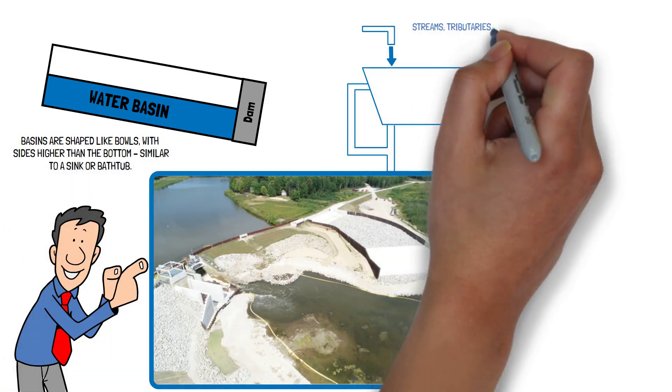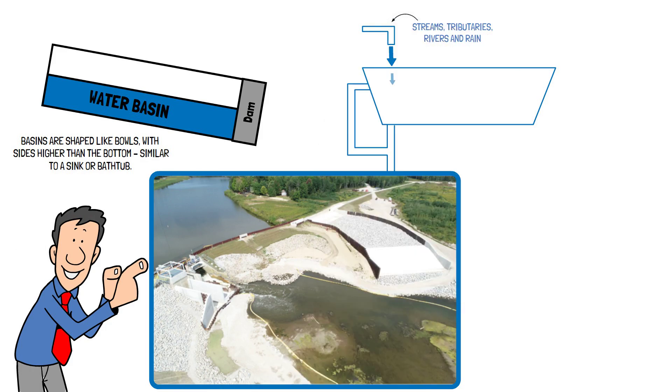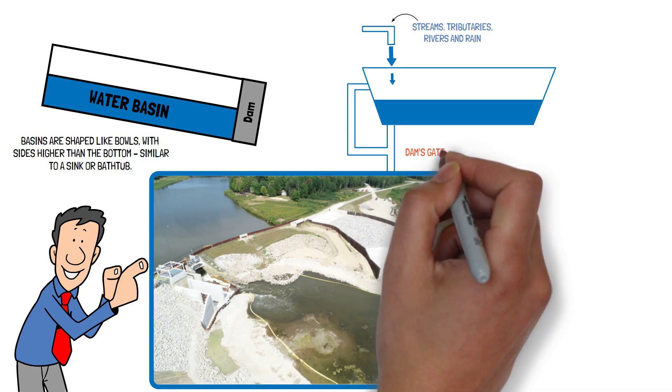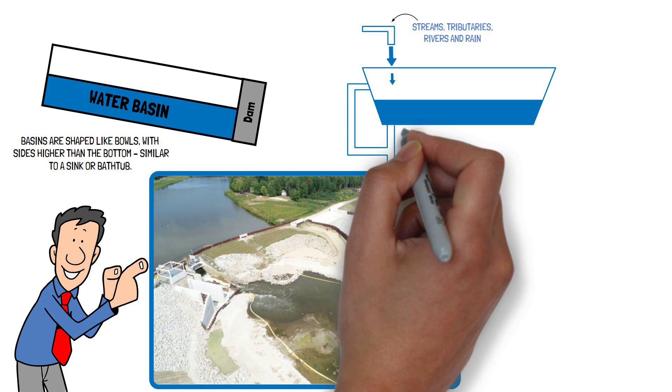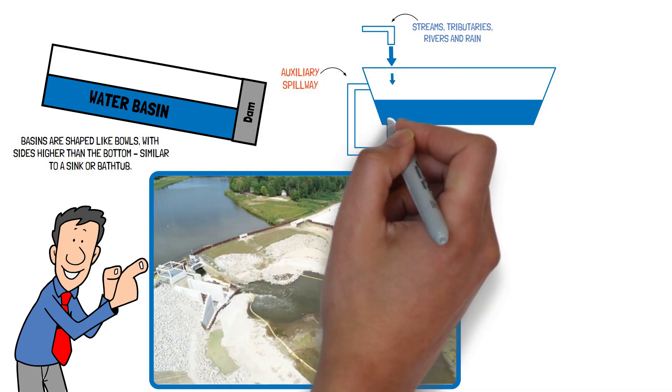Streams, tributaries, rivers, and rain are the faucet feeding water into the lake. The dam spillways are like the drain, and the auxiliary spillway is like the overflow outlet.